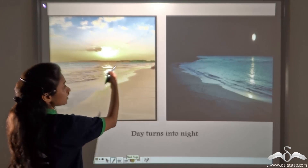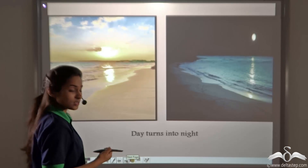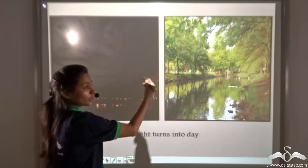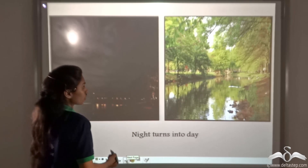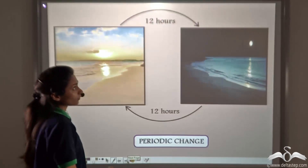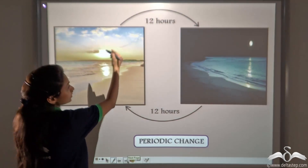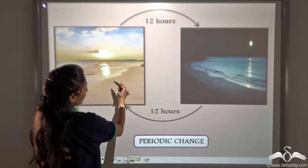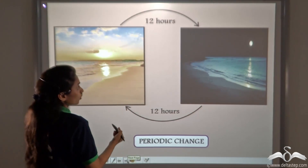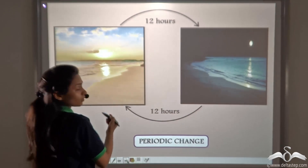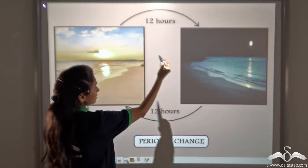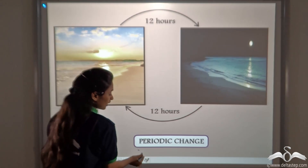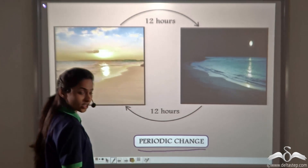Similarly, day turns into night after 12 hours and night turns back into day in 12 hours — this cycle goes on. This is a periodic change, meaning it takes place at a regular interval of time, or after a fixed period of time. That is why it is called a periodic change.